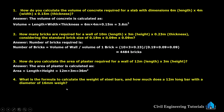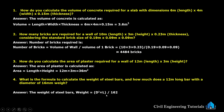Next: what is the formula to calculate the weight of steel bars, and how much does a 12 meter long bar with a diameter of 16 mm weigh? The weight formula is D²L ÷ 162. With D = 16 mm and L = 12 m: 16² × 12 ÷ 162, giving us 18.69 kg.